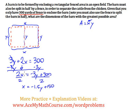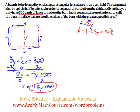So now I take this and plug it in for x. So A equals negative 1.5y plus 150, times y. Distributing the y: negative 1.5y times y is negative 1.5y squared, and 150 times y is 150y.